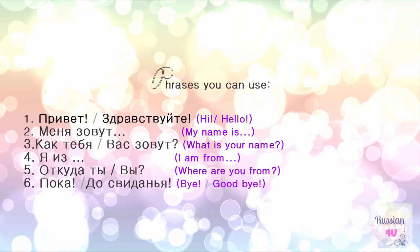The third question: Как тебя зовут? — or in formal — Как вас зовут? The next sentence: Я из — and you can add the country. For example: Я из Америки. Я из Австралии. Я из Германии.